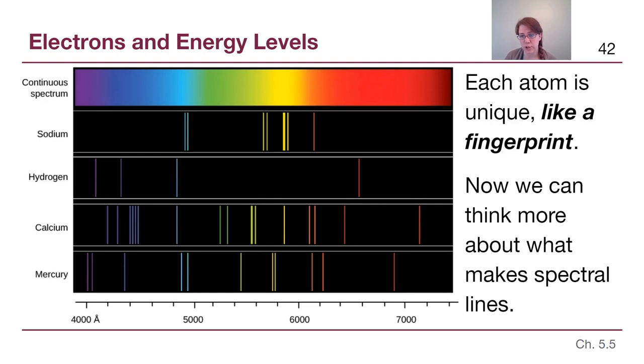So in this section, section 5.5 of the book, we are going to try to understand where these spectral lines are coming from, because of that ladder of energy levels.